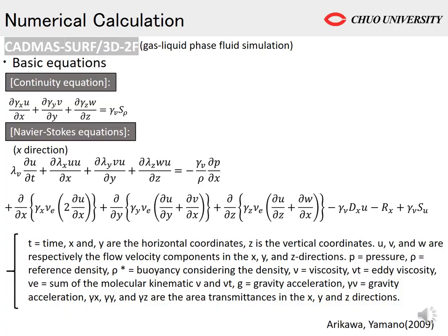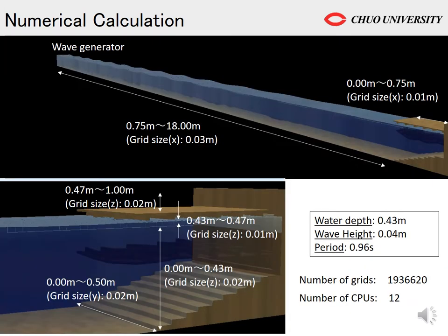Next, I will explain the numerical calculation method. The basic equations are the continuity equation and the Navier-Stokes equations. Discretization is performed in the time direction using the Euler method and the SMAC method. Next are the grid conditions and information about the numerical calculation. The grid size is set to 1 cm for the lower part of the flow slab. The image of the simulation is shown in the figure below.